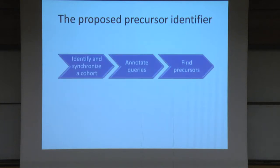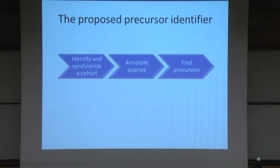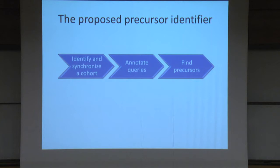Here's what we want to do. We're looking at a three-stage process where first, given some medical condition that we're interested in, we'll identify a cohort of people who are probably suffering from that condition, and we'll synchronize them — meaning we'll say what is the first time that they thought or realized that they had this condition. Then we'll take all the activities of these people, all their queries, go back and try to generalize them. We're not interested in a specific dating site; we want to say when this query was issued, it actually represented something about all dating sites online. And finally, once we have this cohort and these annotated queries, we will look back at the activity of these people and try to find commonality — what did these people do shortly before they developed the condition? I'm going to talk both about the methods and the results of these three stages.